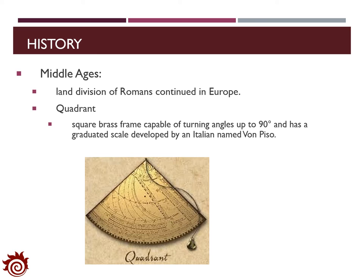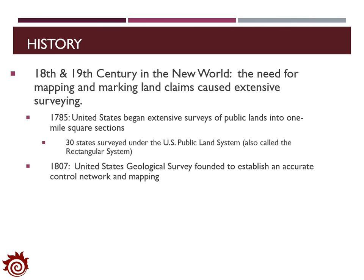In the Middle Ages, the land division system developed by Rome was widely implemented in Europe, and new survey instruments such as the quadrant were invented. The quadrant is applied to measure directions and angles — it has a square frame and is able to turn angles up to 90 degrees. In the new world, from the 18th to 19th century, the need for mapping and marking land claims caused extensive surveying demand. In 1785, the United States began extensive surveying of public lands into one-mile square sections, and the U.S. public lands system conducted surveying for 30 states.